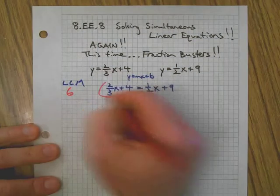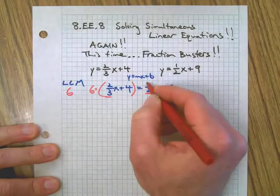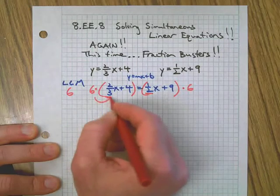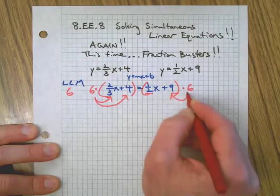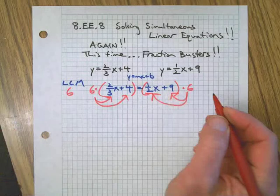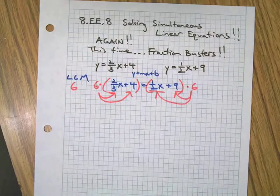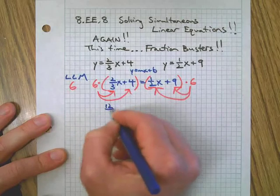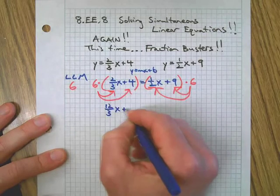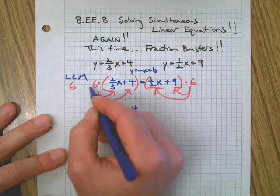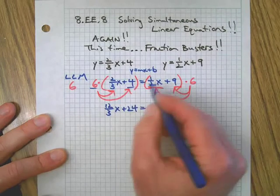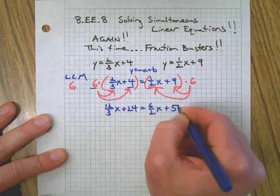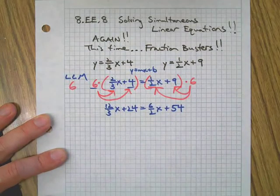Once you do that, you take that number and you multiply it by every single thing in the equation using the distributive property. We're going to distribute that 6, that least common multiple, to everything in this equation. So step one would be 6 times 2/3 is 12/3. I'm going to give you the in-between step here so you can see what's going on. 6 times 4, then we have 6 times 1/2 which is 6/2, and 6 times 9 which is 54.